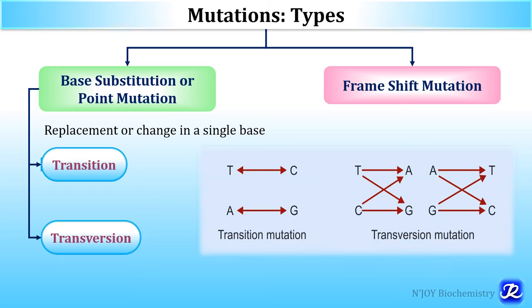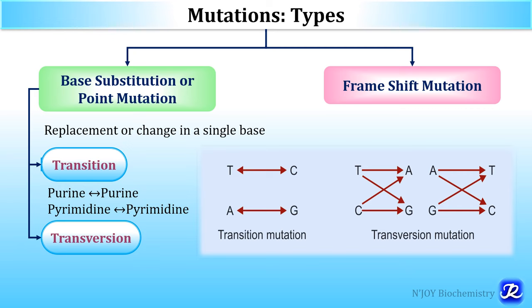What happens in the transition type of mutation? It is the replacement of a purine by another purine, meaning purine is changed to another purine, or pyrimidine is changed to another pyrimidine. For example, there can be interconversion of thymine to cytosine or adenine to guanine. This is called transition.